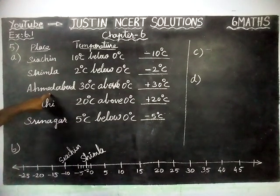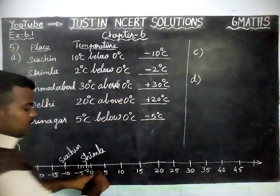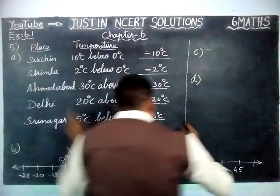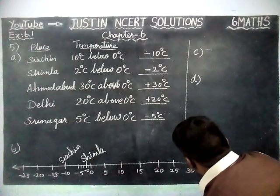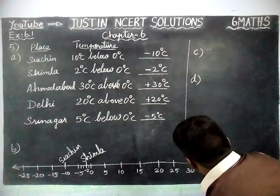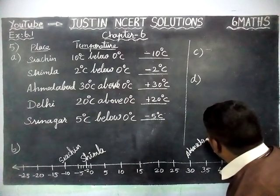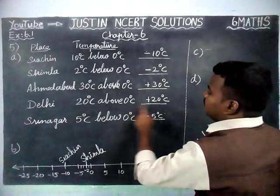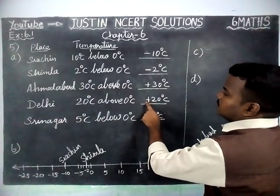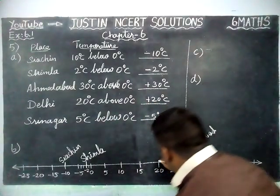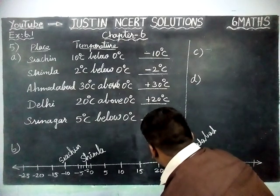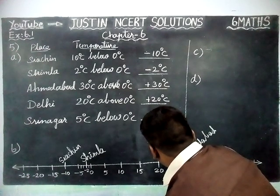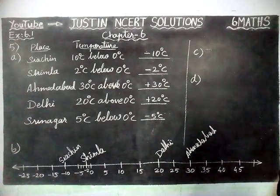And the next one, Ahmedabad, is plus 30 degree Celsius. Plus is on the right-hand side. This is 30 degree Celsius, so plus 30 degree Celsius — that is Ahmedabad. And the next one, Delhi, is 20 degree Celsius — plus 20 degree Celsius. So plus 20 is here, and this is Delhi, 20 degree Celsius.